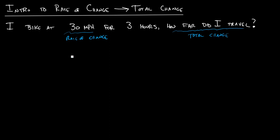And the way we can do this, we would just take 30 times 3. I would take my rate of change times the amount of time I was doing that, and I would get 90 miles. That's my total amount of change over that time.